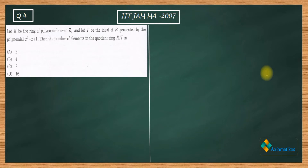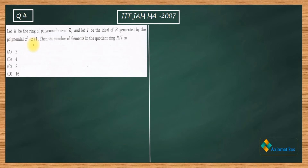Hello dear students, welcome to Axiomaticos. This video is part of the solution series for IIT JAM 2007. We have Problem 4 from the topic abstract algebra. The problem states: let R be the ring of polynomials over Z₂, let I be the ideal of R generated by the polynomial x³+x+1, then the number of elements in the quotient ring R/I is what?